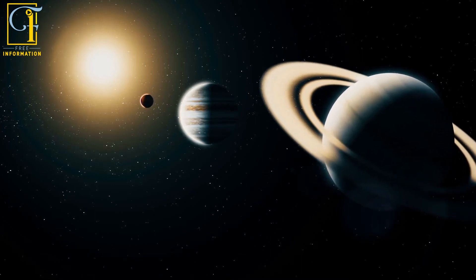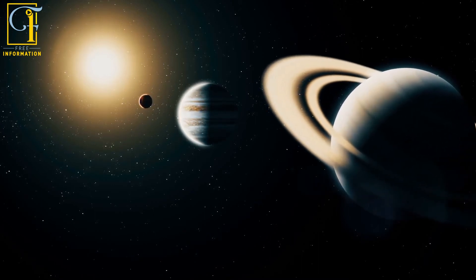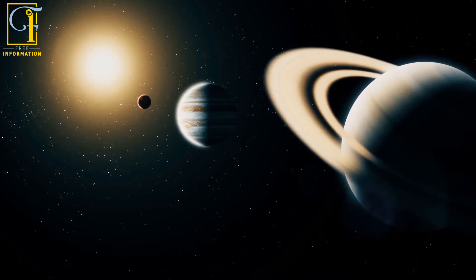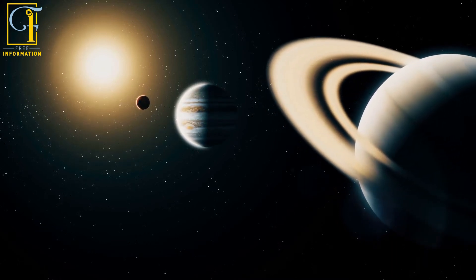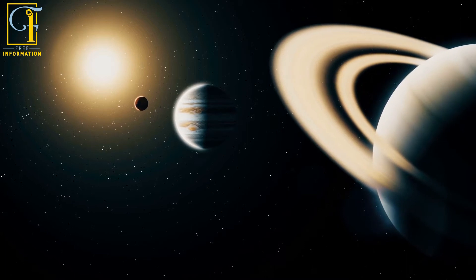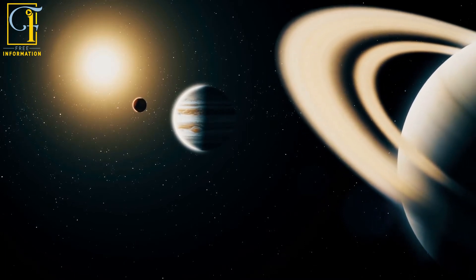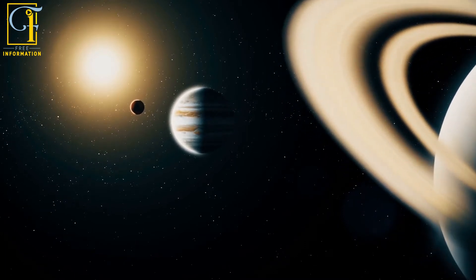Although Saturn is one of the largest planets in our solar system, it is the least dense among the planets. The planet's density is less than water, so if you placed Saturn on a surface of water, it would float.